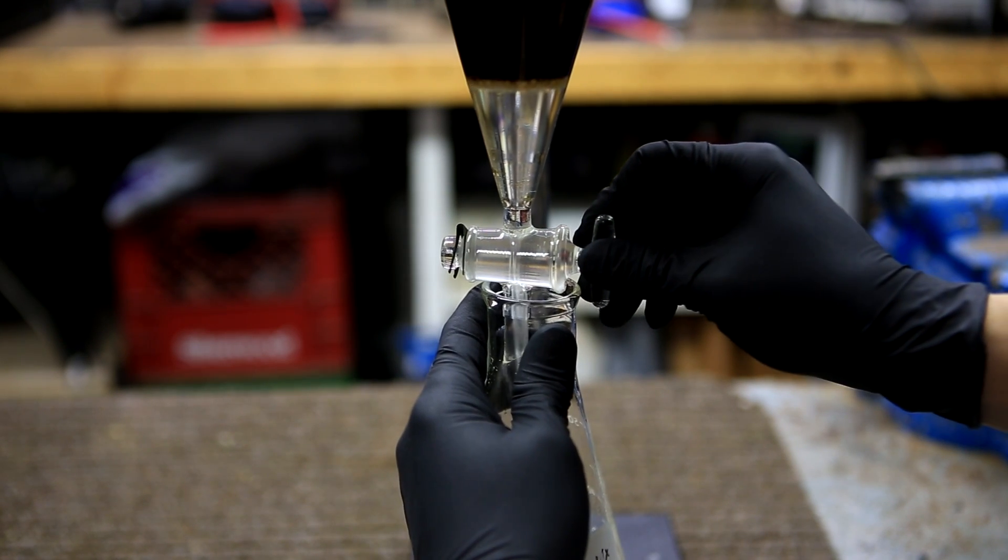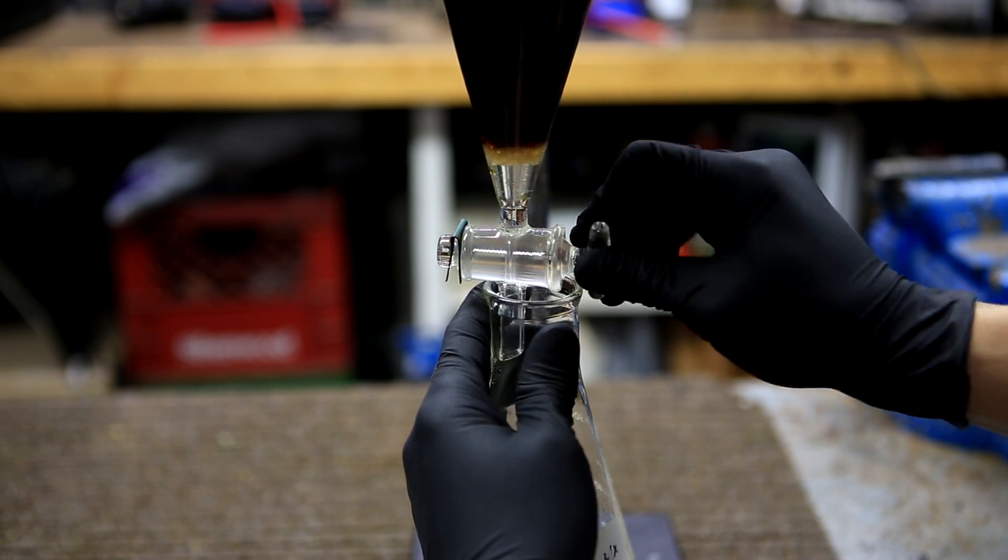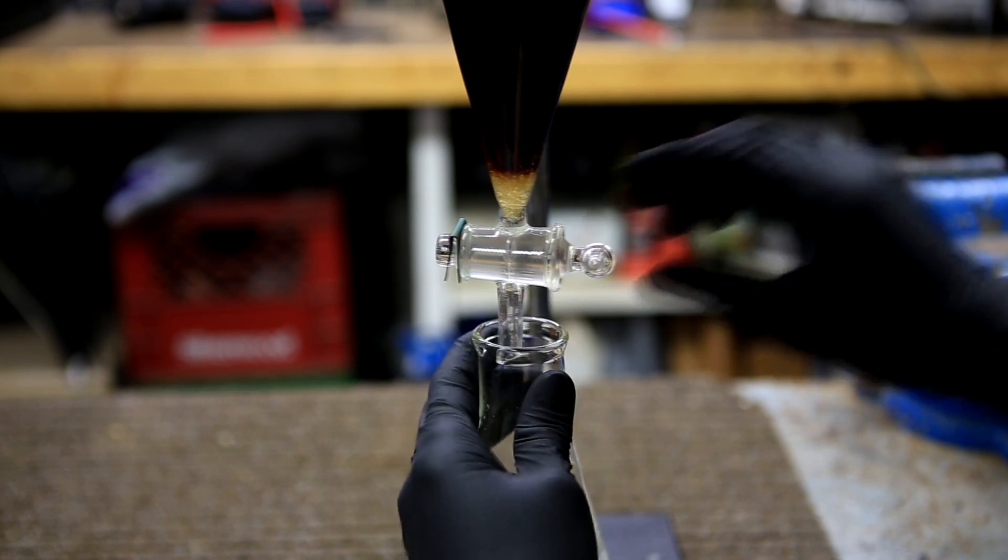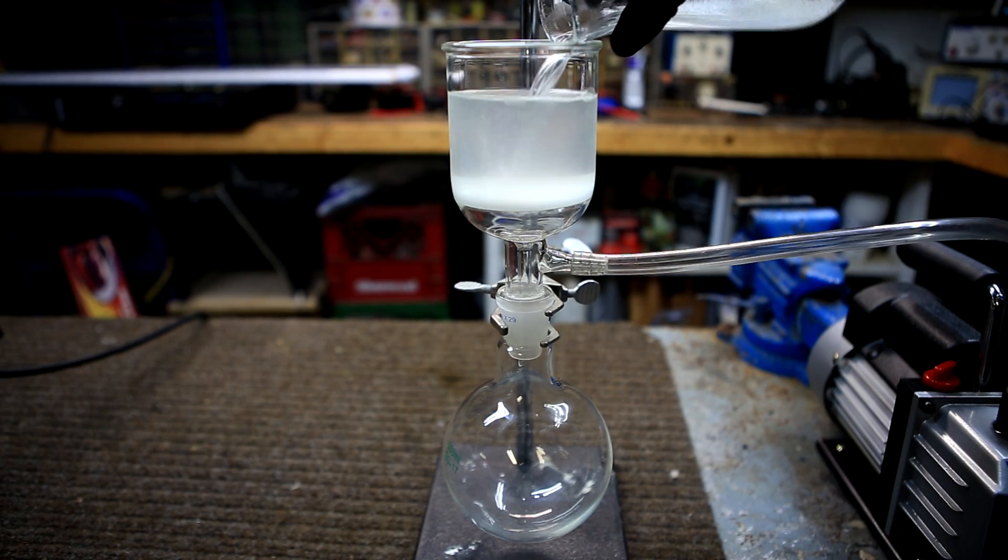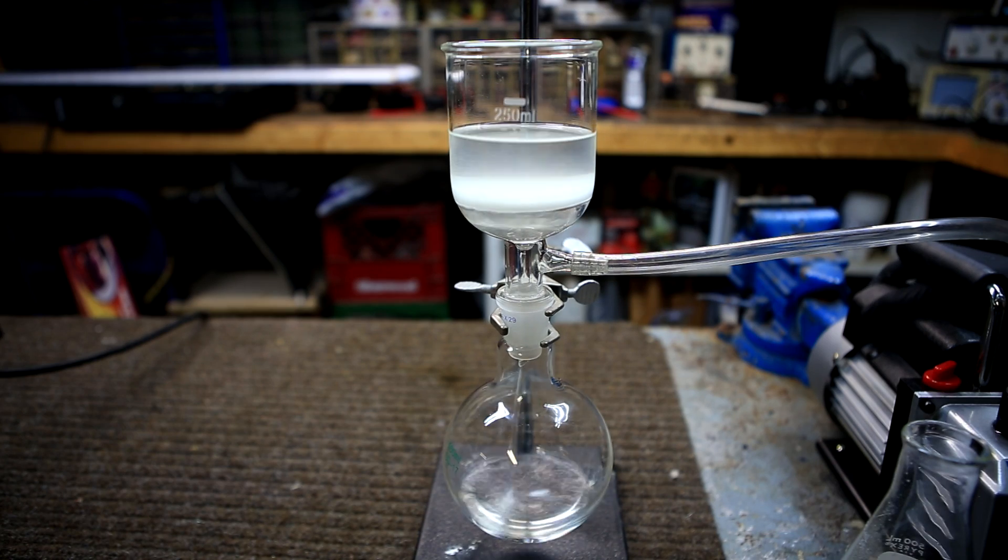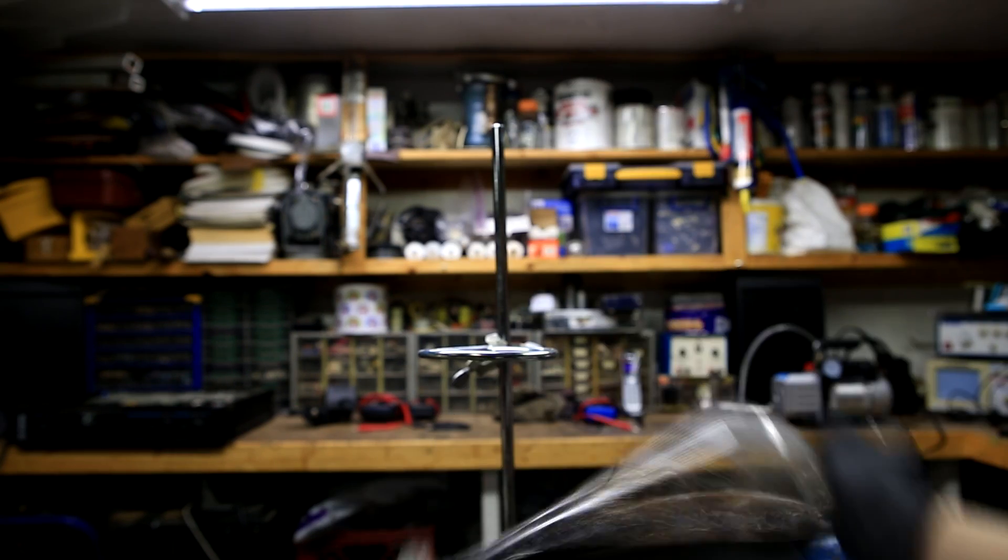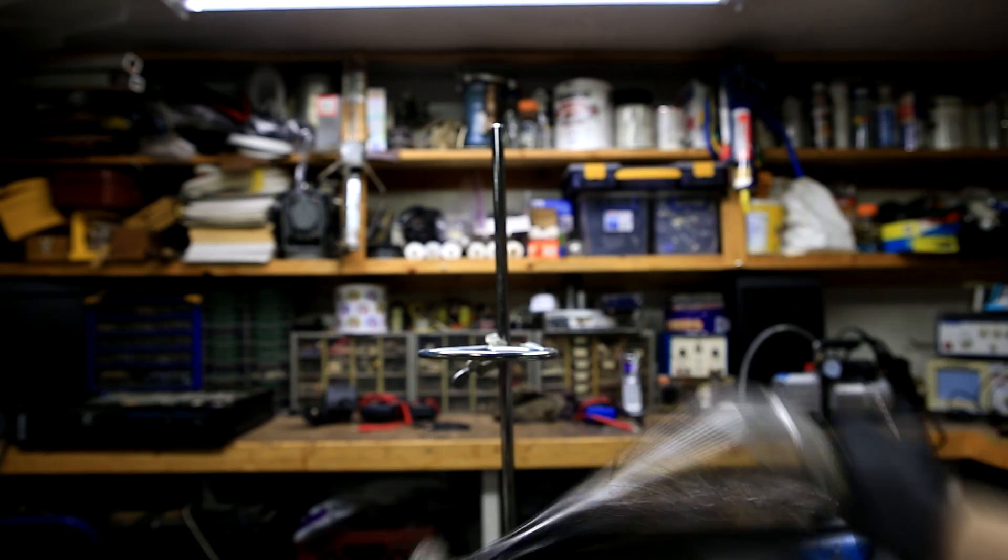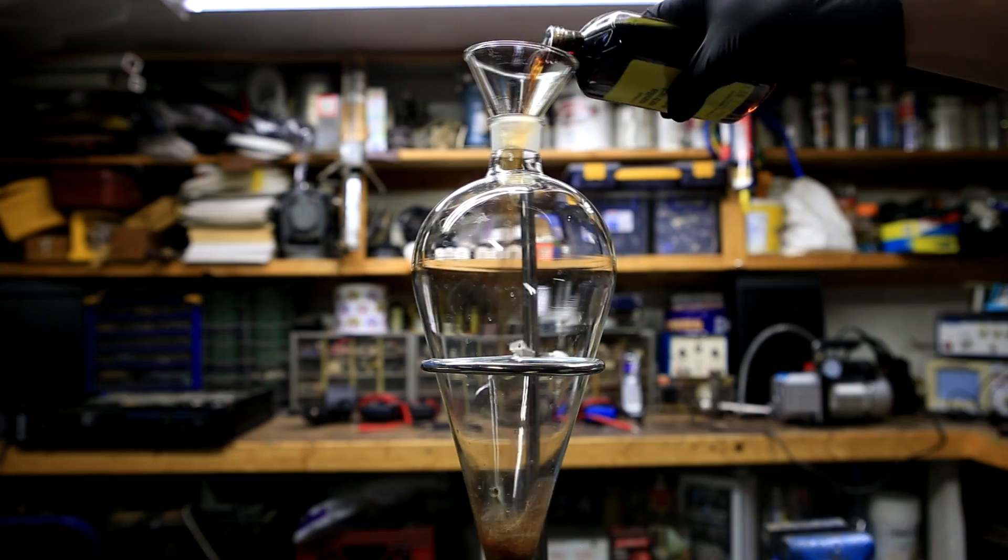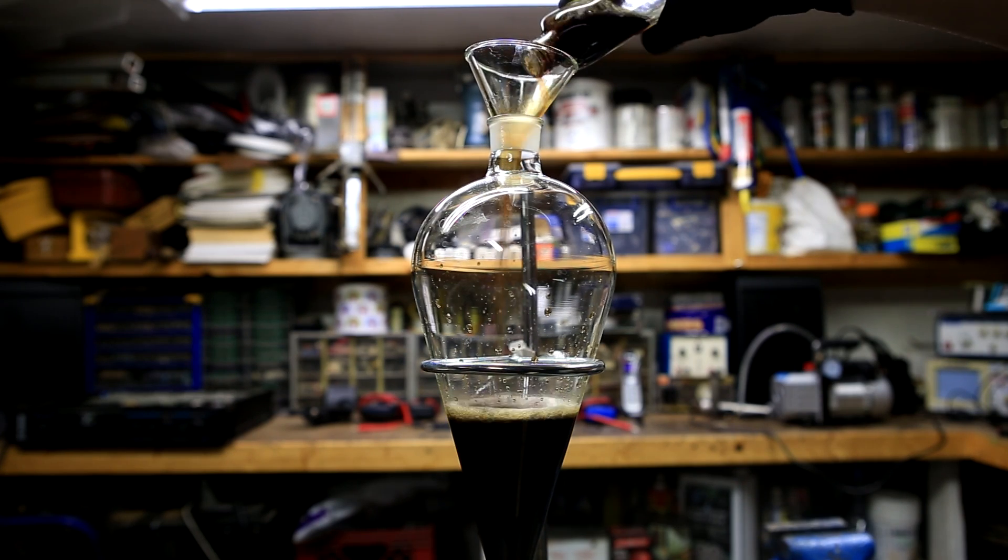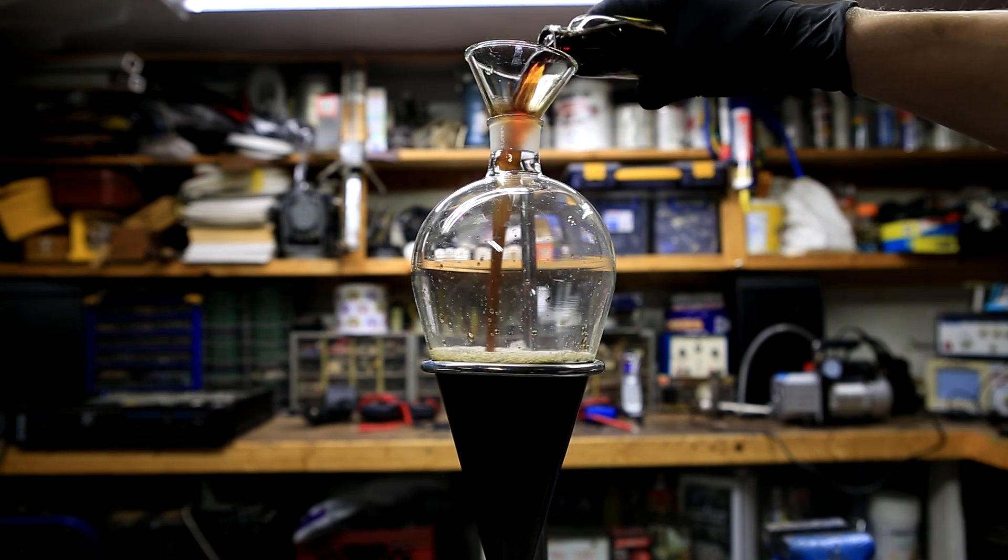Vanillin is the major flavor component of vanilla and the majority produced is used in food. However, vanillin is also a useful chemical precursor for other large molecules. I'm particularly interested in it because it's used as a precursor in the synthesis of capsaicin and other capsaicinoids. In this video we'll be extracting vanillin from store-bought liquid vanilla extract.